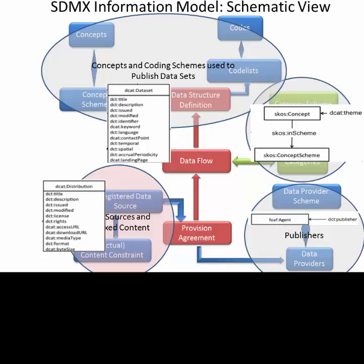However, while most of the mandatory and recommended properties of STAT-DCAT-AP can be found in SDMX, most of the optional properties — and even some of the mandatory and recommended properties — would need to be provided by using the SDMX annotation mechanism.